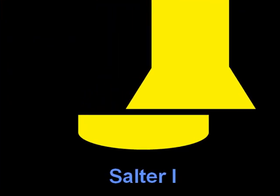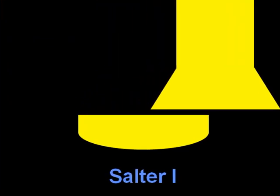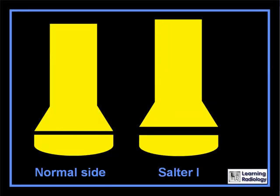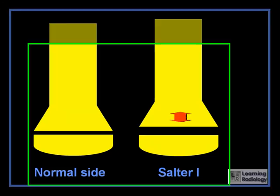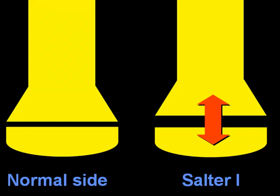Salter-Harris 1 fractures are usually the result of shearing forces. Unless there is displacement of the metaphysis on the epiphysis, they can be very difficult to diagnose. Sometimes, obtaining the opposite side for comparison can be helpful in demonstrating widening of the epiphyseal plate.